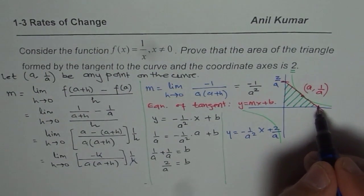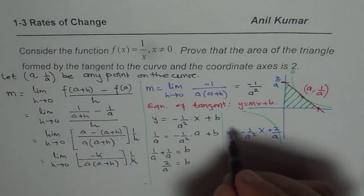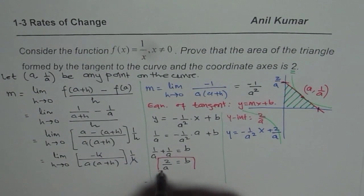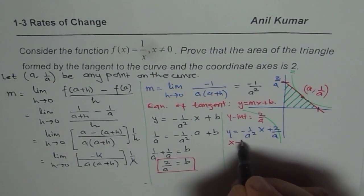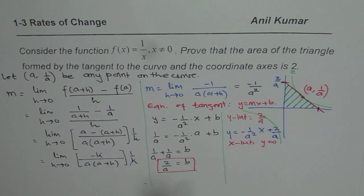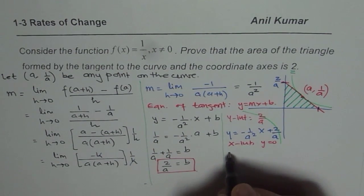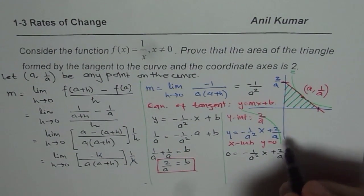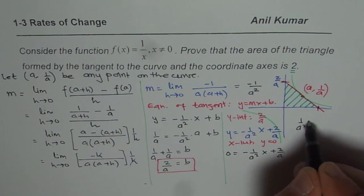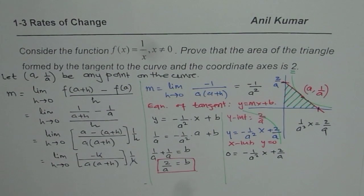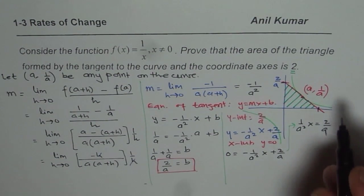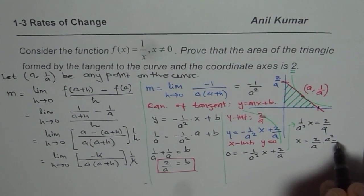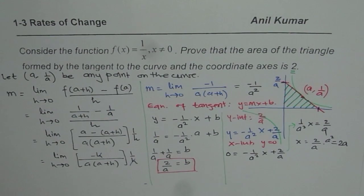Now we know the y-intercept is 2/a. To find the x-intercept, we equate y = 0 and solve for x. Setting 0 = (−1/a²)x + 2/a, we get (1/a²)x = 2/a. Cross-multiplying: x = (2/a) × a² = 2a. So the x-intercept is 2a.